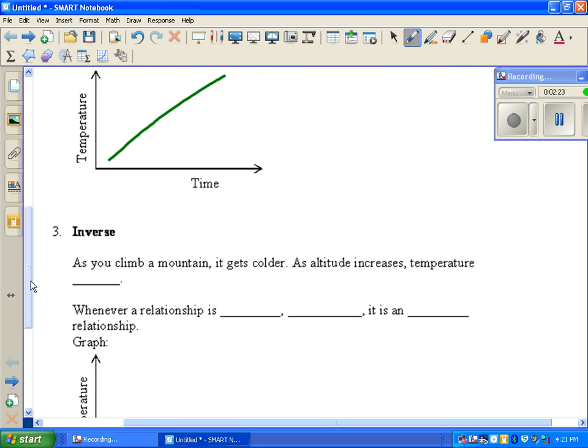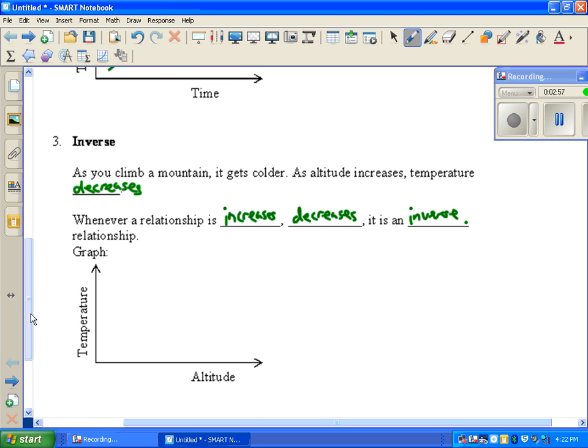Now, the opposite we're going to call an inverse. As you climb a mountain, it gets colder. So as altitude increases, the temperature decreases. So whenever you see a relationship that says increases followed by decreases, we're going to call that an inverse relationship. And a graph for that is going to look like this: as altitude goes up, temperature goes down, so they're doing the opposite. And that's going to tilt downward like so.